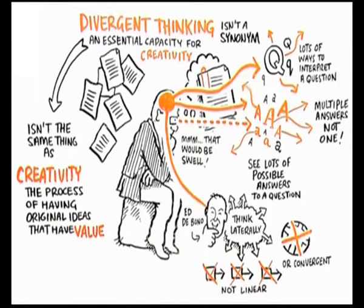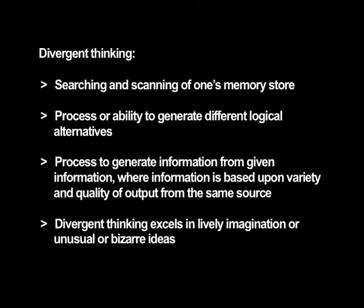Divergent thinking is the process of generating multiple solutions to a problem, thinking in different directions, seeking out variety from known and remembered information, producing a large variety of responses, searching and scanning one's memory store, generating different logical alternatives, and generating information from given information where output is based upon variety and quality from the same source. Divergent thinking excels in lively imagination or unusual and bizarre ideas. Creative thought is innovative, exploratory, and venturesome with uncertainty for the future. Divergent thinking ability involves fluency, flexibility, originality, and elaboration.